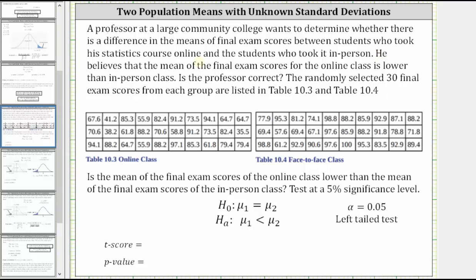He believes that the mean of the final exam scores for the online class is lower than the in-person class. Is the professor correct? The randomly selected 30 final exam scores from each group are listed in the tables below. On the left, we have the online class final exam scores. On the right, we have the in-person final exam scores.